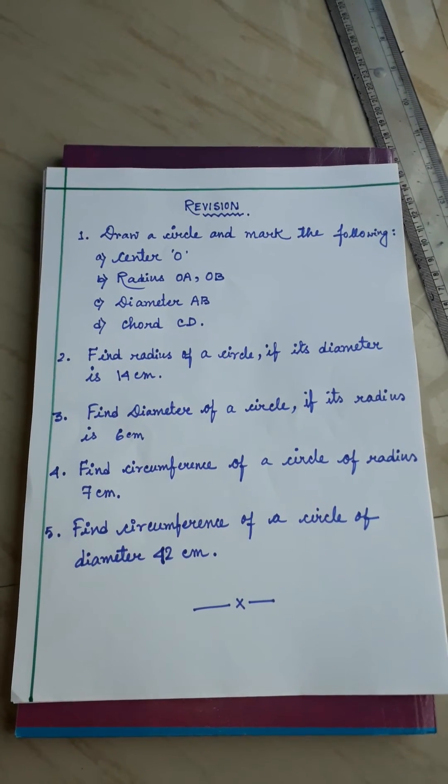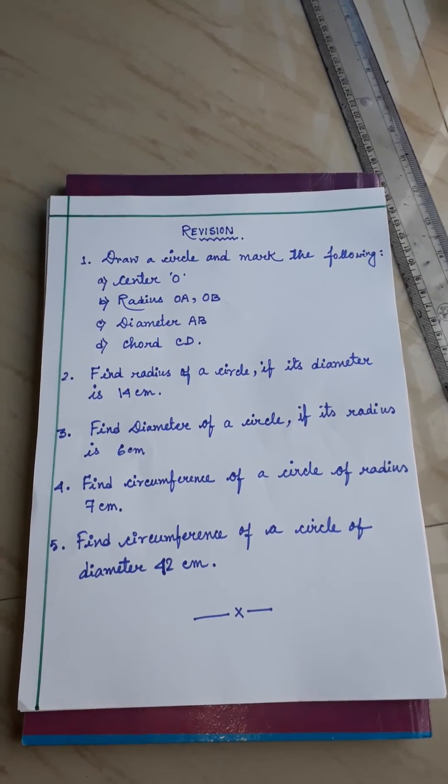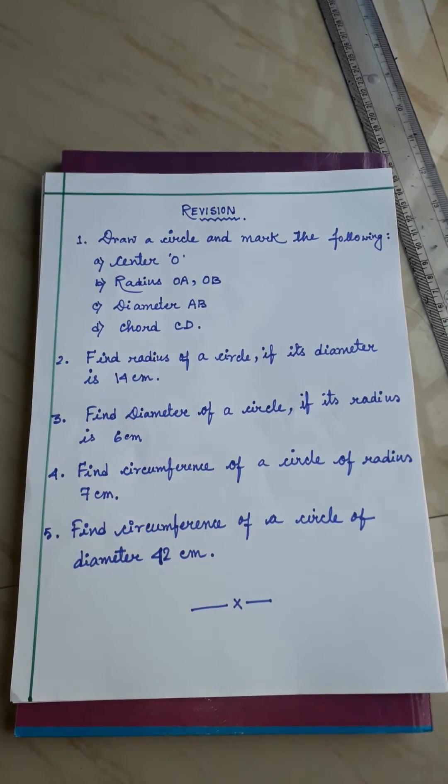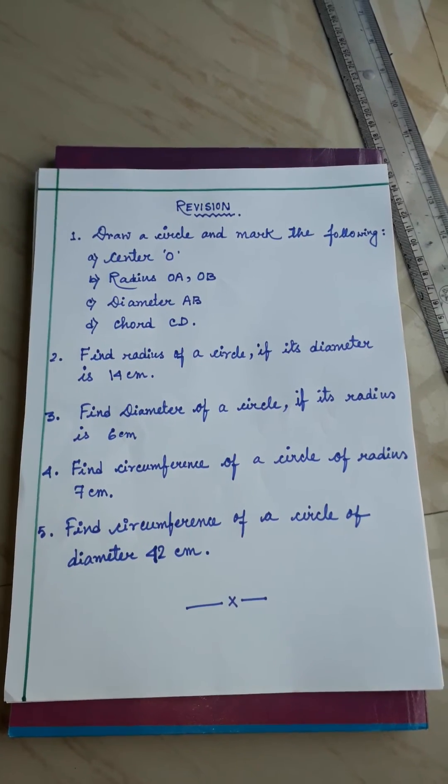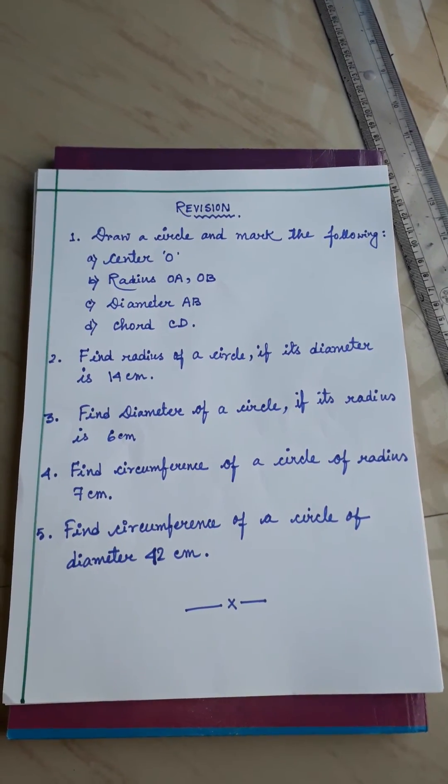And in 5 number, find circumference of a circle of diameter 42 cm. So these are the 5 sums from the chapter Circles and Wells that you have to do in your maths copy.